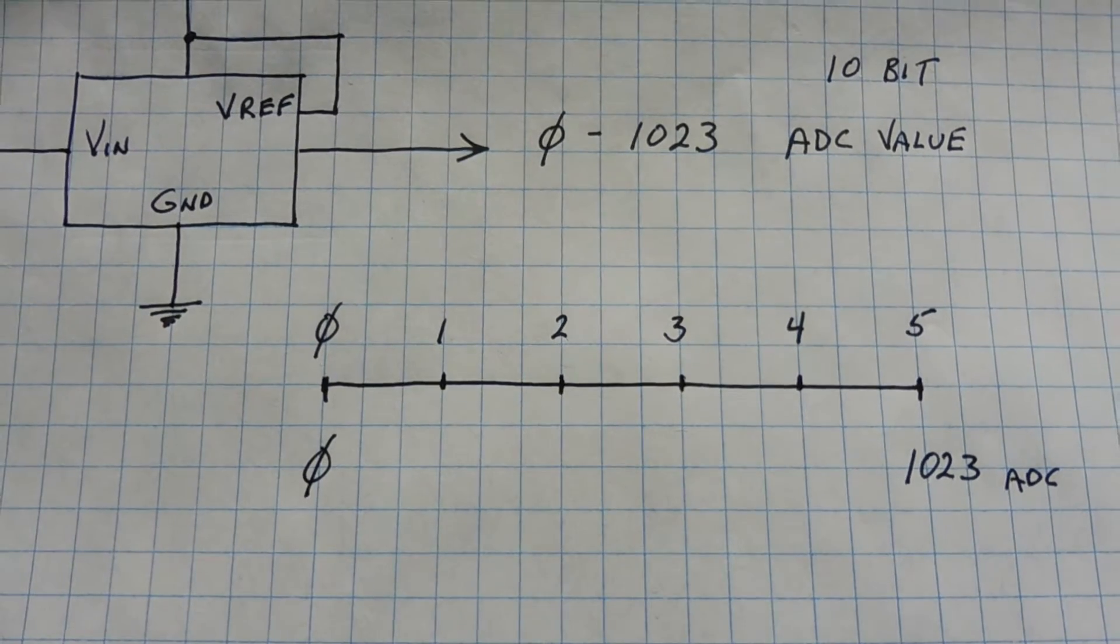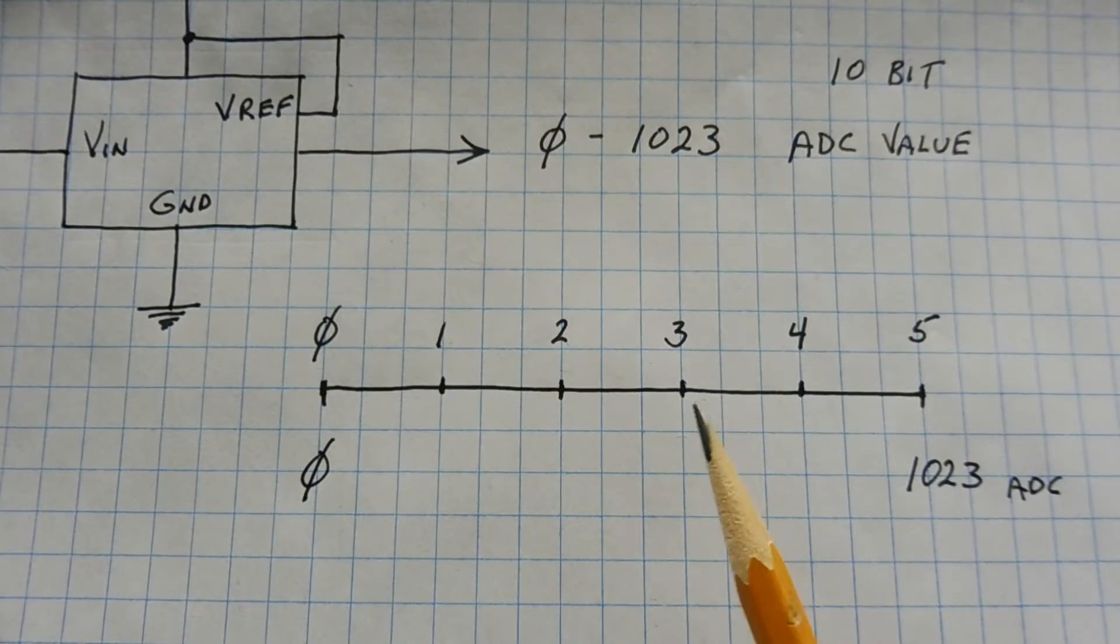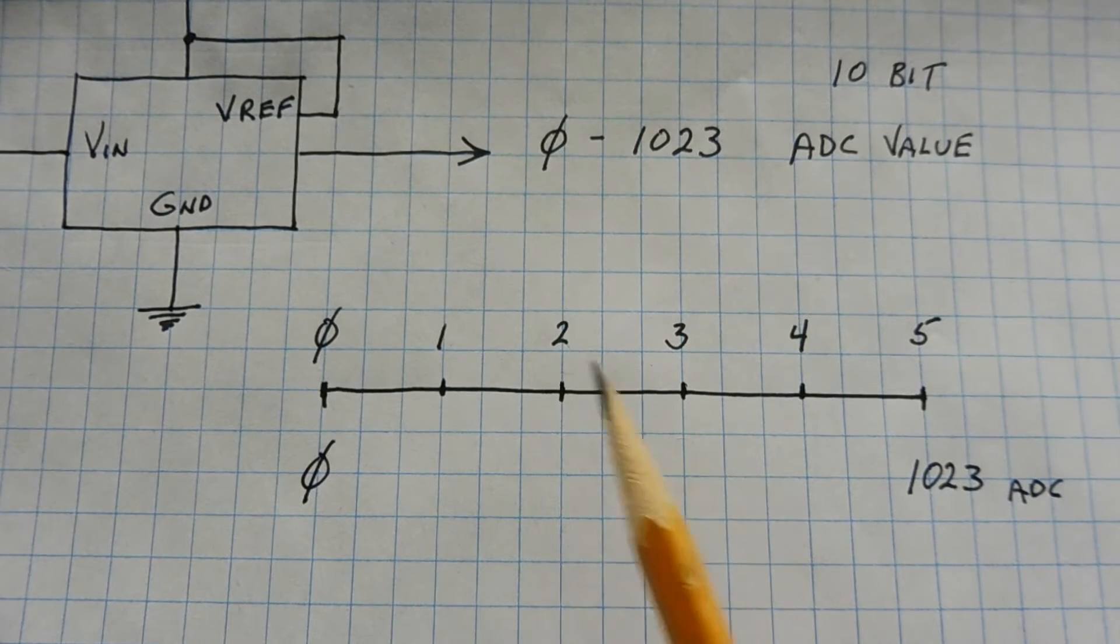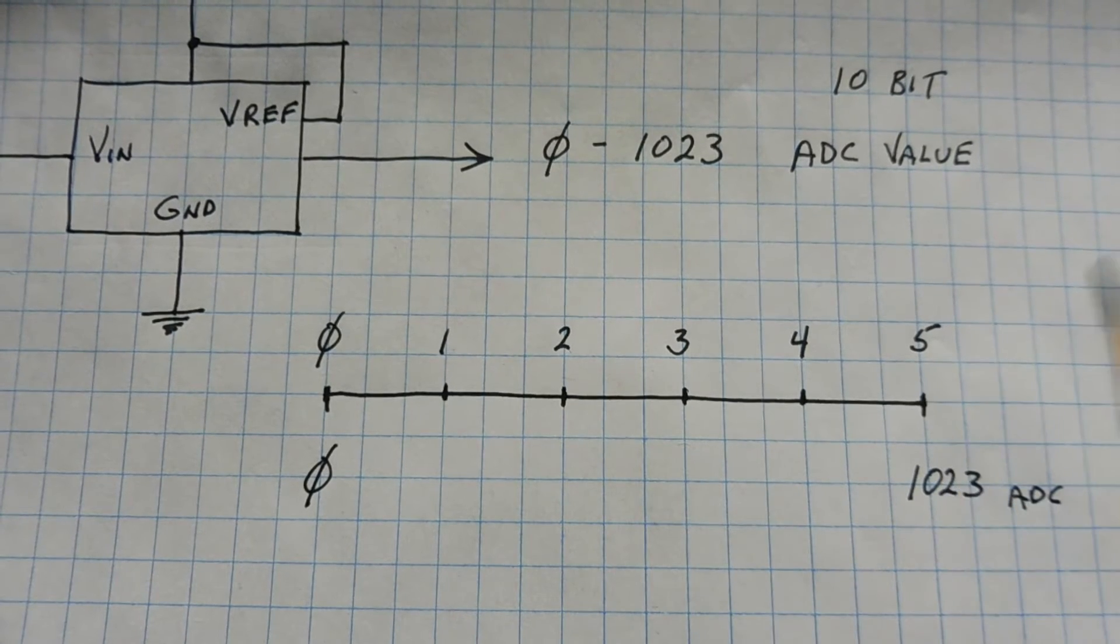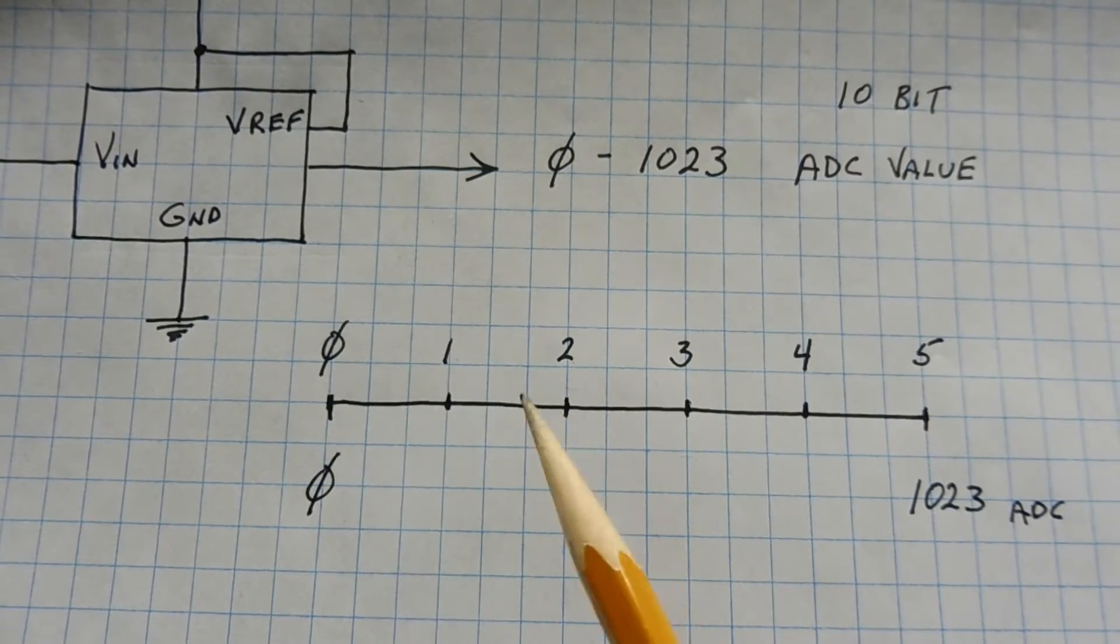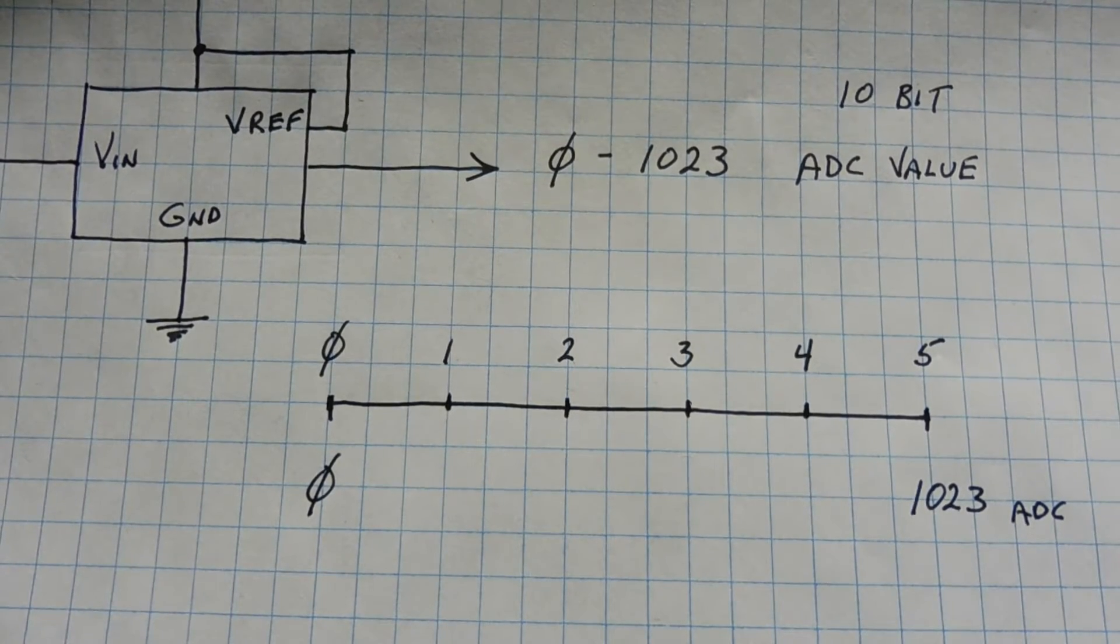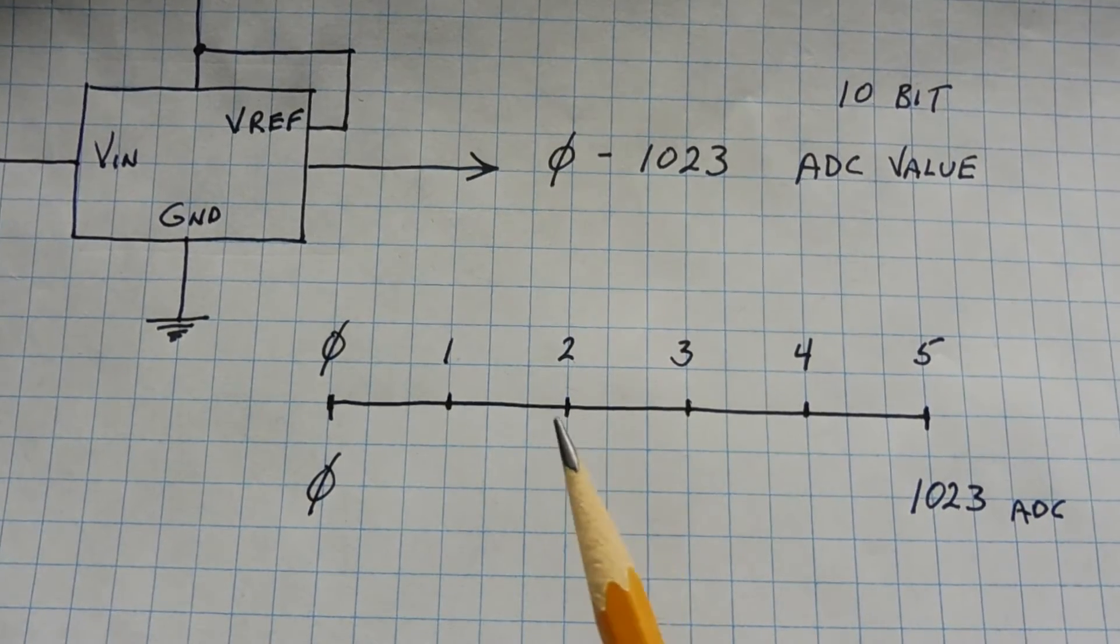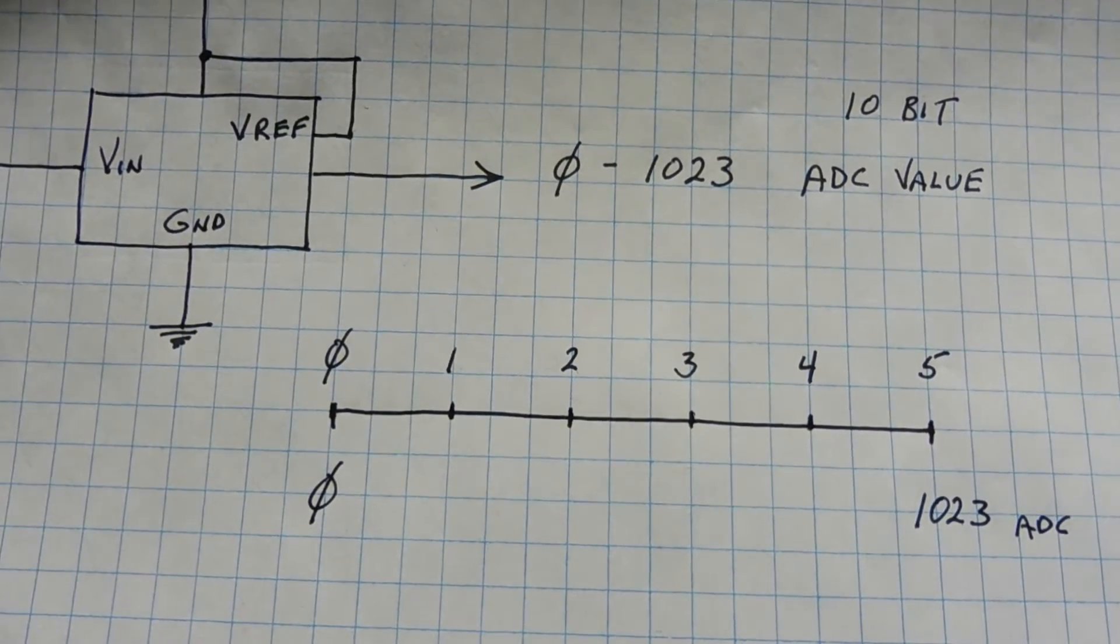Now, our problem comes, what about if our sensor only puts out a voltage from 2 volts to 3 volts? That's the total span. So, we'll be wasting the resolution between 0 and 2 volts, and between 3 and 5 volts. We'll be wasting those bits, those steps, because the ADC will never go there. So, how can we apply the full 10 bits, the full 1024 steps, between the 2 volts and 3 volts? That's where we use differential voltage input ADC.